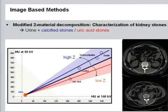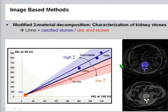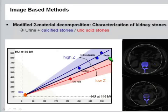By changing the two materials in the decomposition, you can characterize kidney stones. With a suitable separation line, you can classify stones with high atomic number — colored in blue — such as hydroxyapatite or oxalate, and stones with low-Z material such as uric acid. These can be automatically characterized and color-coded.